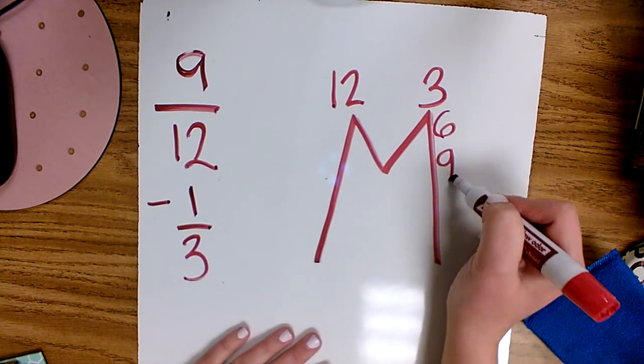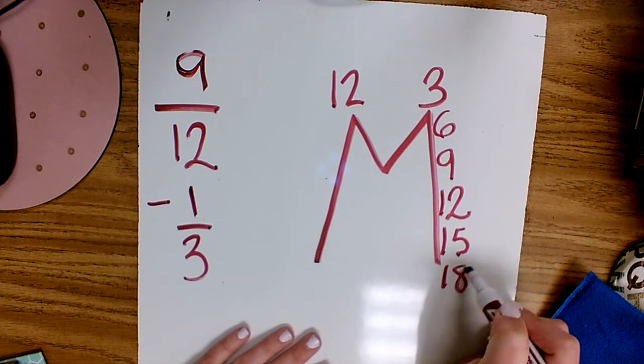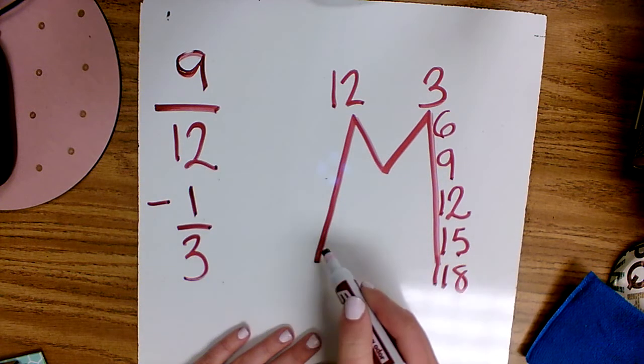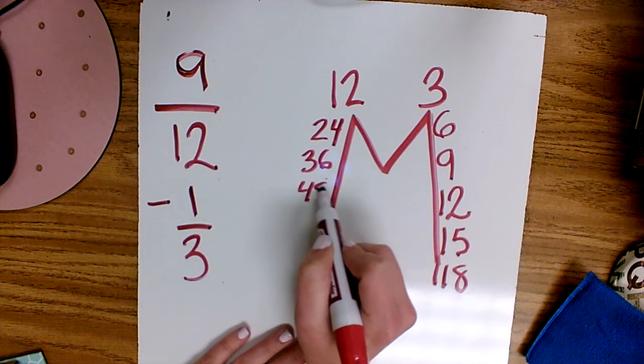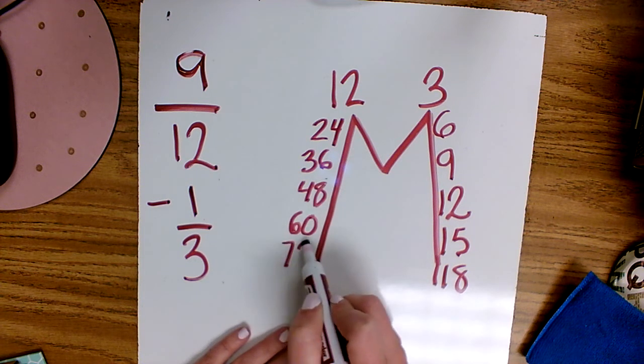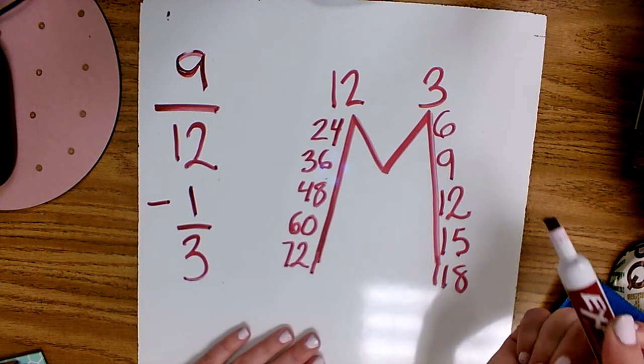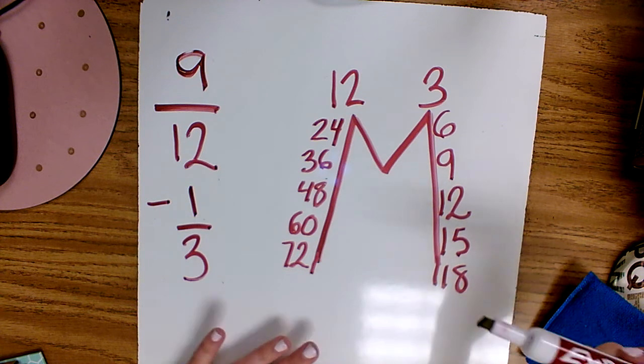So three, six, nine, twelve, fifteen, eighteen. And then I go down five on the other side: twelve, twenty-four, thirty-six, forty-eight, sixty, seventy-two. Then I mark off and find which number they share and have in common that's the smallest.